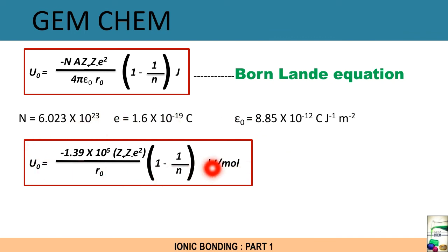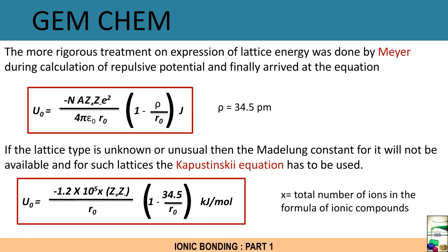On the more rigorous treatment on expression of the lattice energy was done by Mayer, and this equation is Born-Mayer equation. During the calculation of repulsive potential, this rigorous treatment was done and finally arrived at an equation where all parameters are same except this expression is being replaced by ρ/r₀, where ρ has a fixed value of 34.5 picometer.